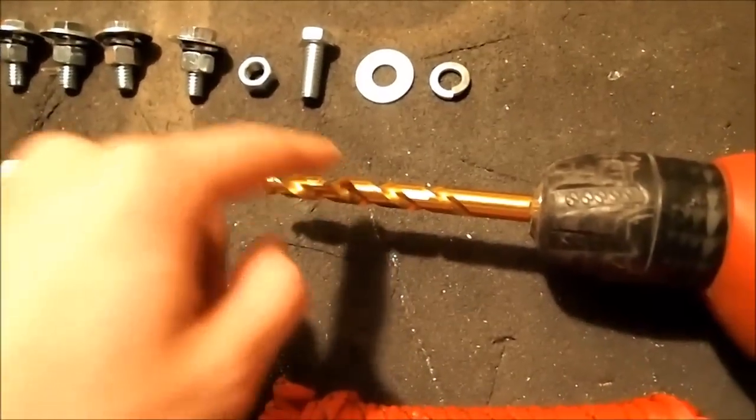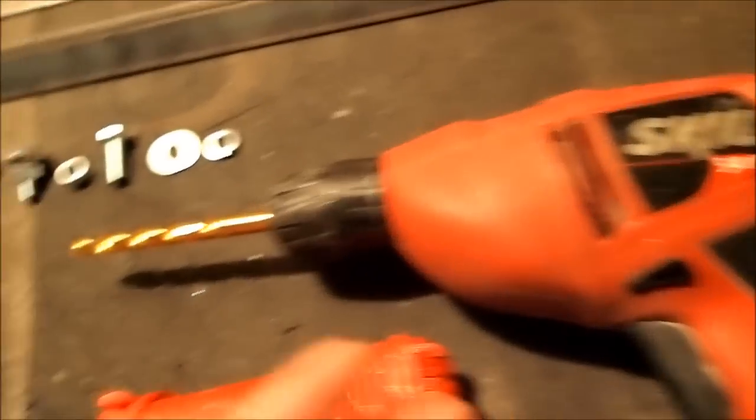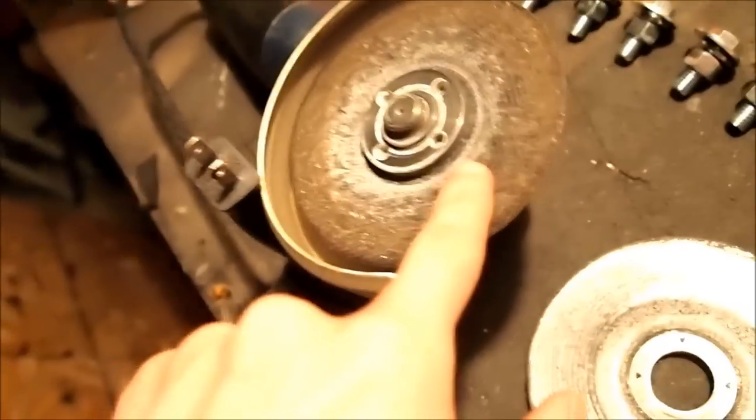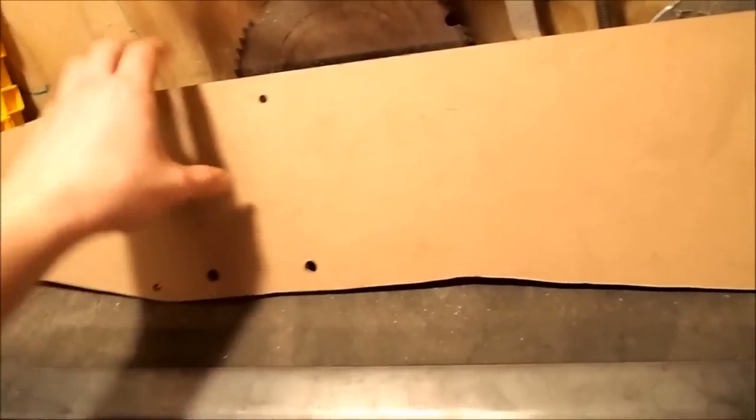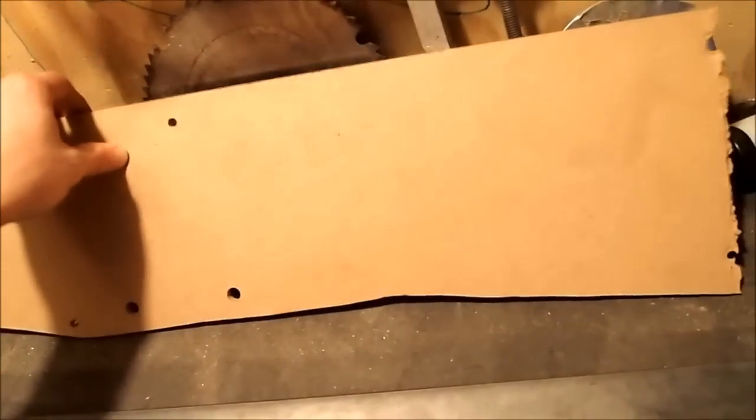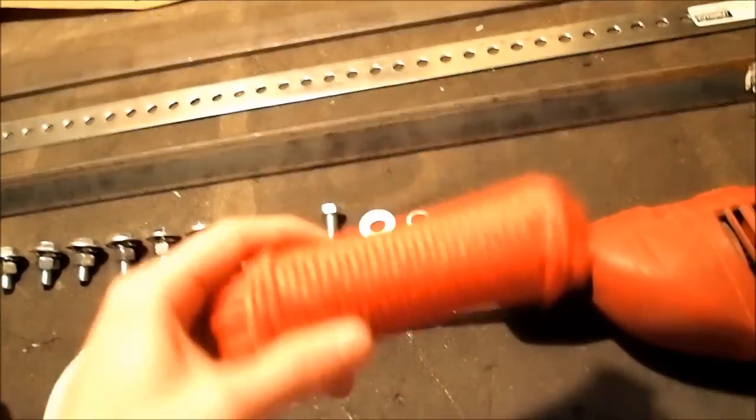And then you're going to need a drill bit that is also three eighths of an inch and a drill, obviously. An angle grinder with a cut off wheel and a grinding wheel. And then for the handle, any sort of quarter inch wood or board that you can find. This is just some craft board from Home Depot. And to wrap it, we're going to use some paracord.